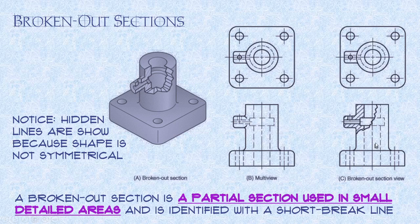Also notice that we show the hidden lines. If it's not symmetrical, we show the hidden lines because it's not symmetrical. So once again, a broken out section is a partial section used in small detailed areas and is identified with a short break line. Hidden lines are shown because the shape is not symmetrical. And that's going to be the key. If it's symmetrical, you can leave the hidden lines off. If it's not symmetrical, you have to show the hidden lines to identify the hidden features.